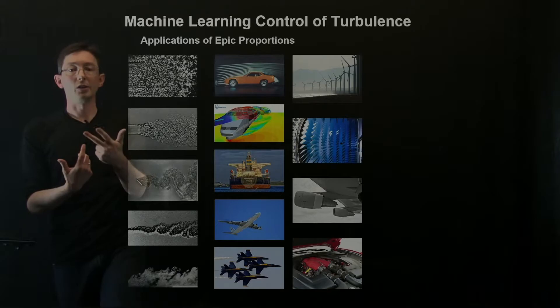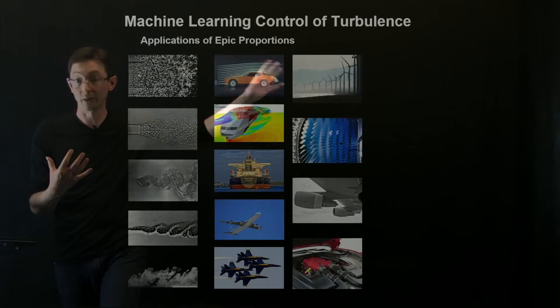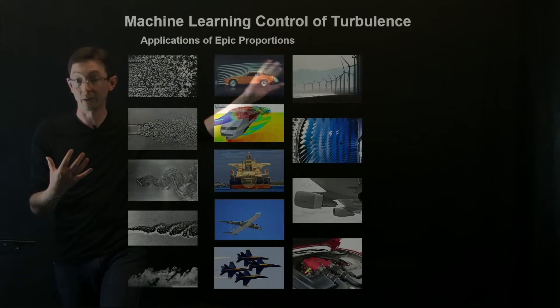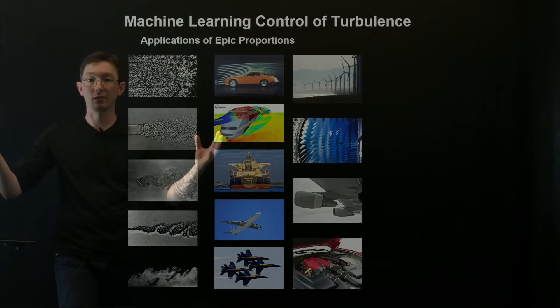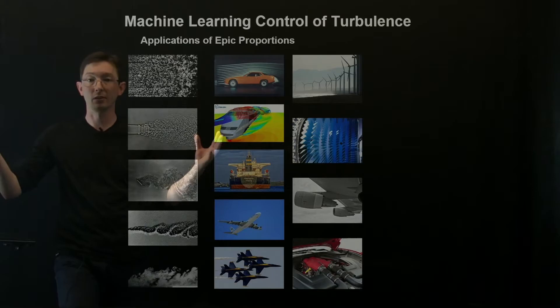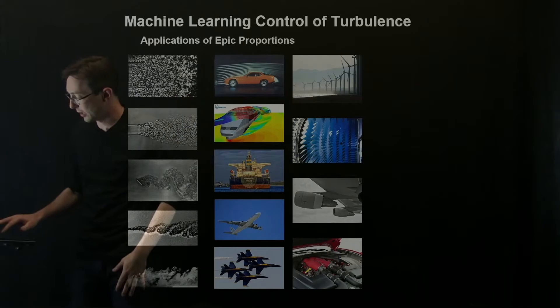And so if you can get performance gains in turbulence control, you have the potential to improve almost all of these applications. So you can increase lift, decrease drag, change the mixing in a flow. Those are all high level objectives that can directly translate into better performance in these systems. So even improving the mixing in a combustion engine by a few percent might translate to billions of dollars of global savings annually. I mean, these are huge problems and even a little bit of improvement can translate to big performance gains.